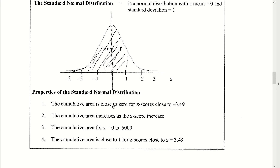Just to summarize: the cumulative area is close to zero when your z-score is near negative 3.49. The term 'cumulative area' always refers to the area to the left of a z-score. As the z-score increases — moving to the right — we capture more and more area to the left. The total area is 1, so half lies to the left of the mean and half to the right. At a z-score of 3.49, almost all of the area lies to the left.